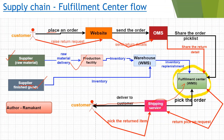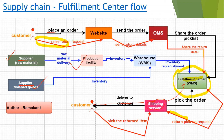For the return journey, follow the red arrows. When a customer submits a return request on the website, the return details are shared with the OMS, which shares them with the fulfillment center. The FC informs the shipping service, which visits the customer, collects the item, and sends it to the fulfillment center. Once received, the FC performs a quality check. If the item is acceptable, the inventory is updated, and the order management system is notified to initiate the refund.